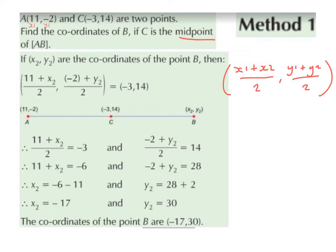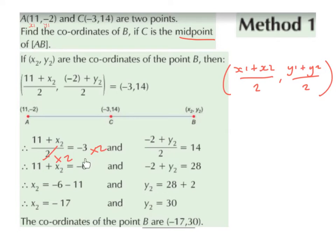If we draw out a line, we can label the point at one end as A, which is (11, -2). The point in the middle is C, which is (-3, 14). And the point at the end is B, which is x2, y2. So we can say that (11 plus x2) divided by 2 equals minus 3. Multiplying both sides by 2, we get 11 plus x2 equals minus 6. Bringing 11 over the equal sign gives x2 equals minus 6 minus 11, which is minus 17.